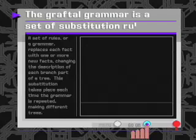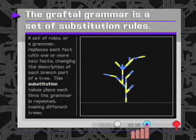The Graftal grammar is a set of substitution rules. Each time the grammar is repeated, each fact is replaced with one or more new facts. The changes can be starting a new branch, adding to the branch length, or ending a branch.